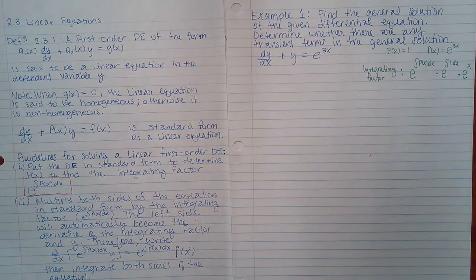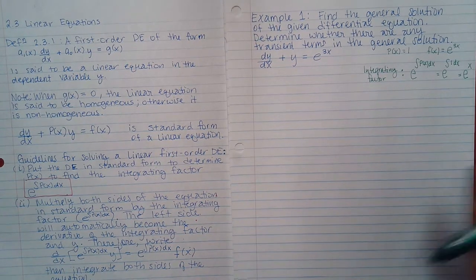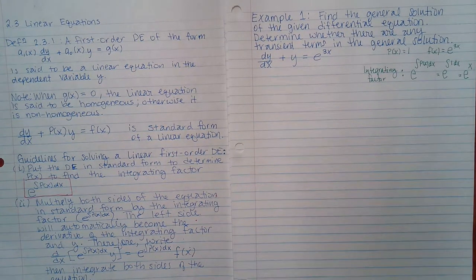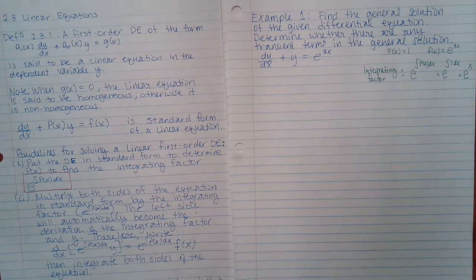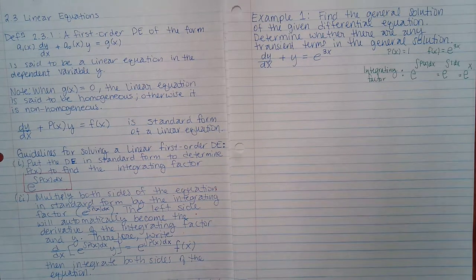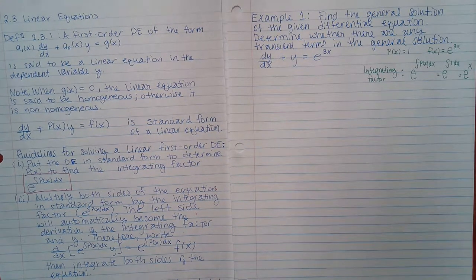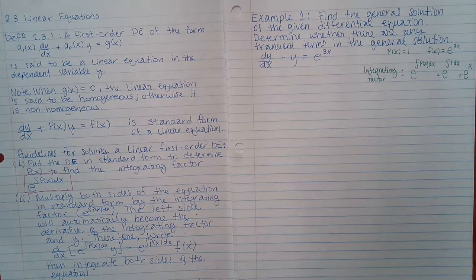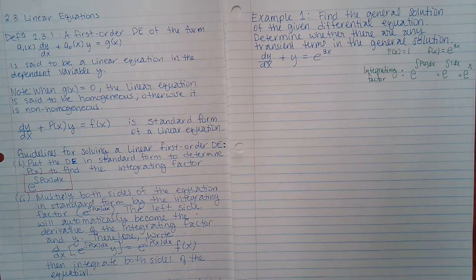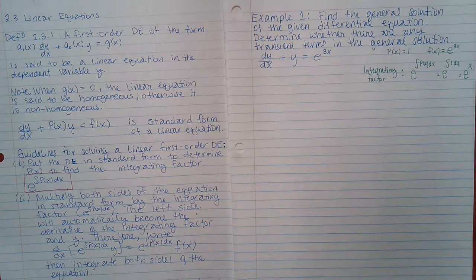Only when the limit of the term y_c equals zero is it called a transient term. So if I take the limit of one term and get zero, that term is a transient term. You may have one or multiple terms in your general solution — take the limit of each one individually and determine if each is transient.